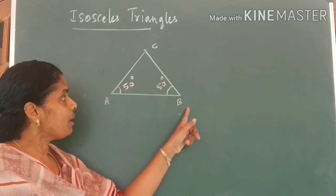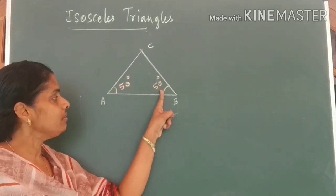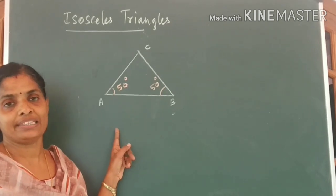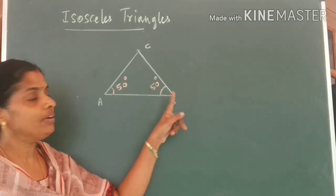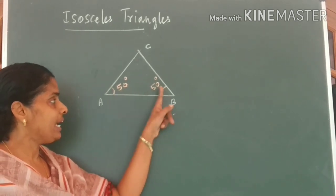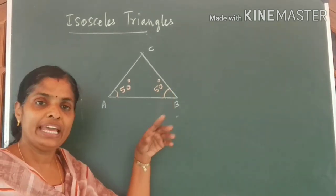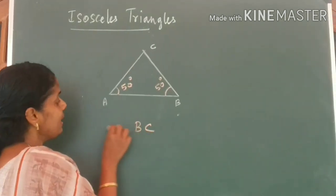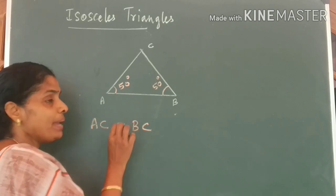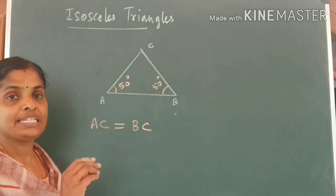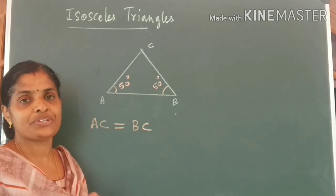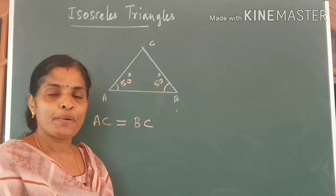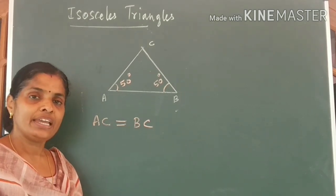I have drawn ABC with angle A and angle B 50 degree. Now, you also should draw a figure like this. Draw a line AB of any measure. Measure 50 degree at A. Measure 50 degree at B also. Or, you take any other angle. If you measure the length of BC and AC, they will be always equal. It is because it is an isosceles triangle. In an isosceles triangle, angles opposite to equal sides are equal. We will work out problems in isosceles triangles in our next class.